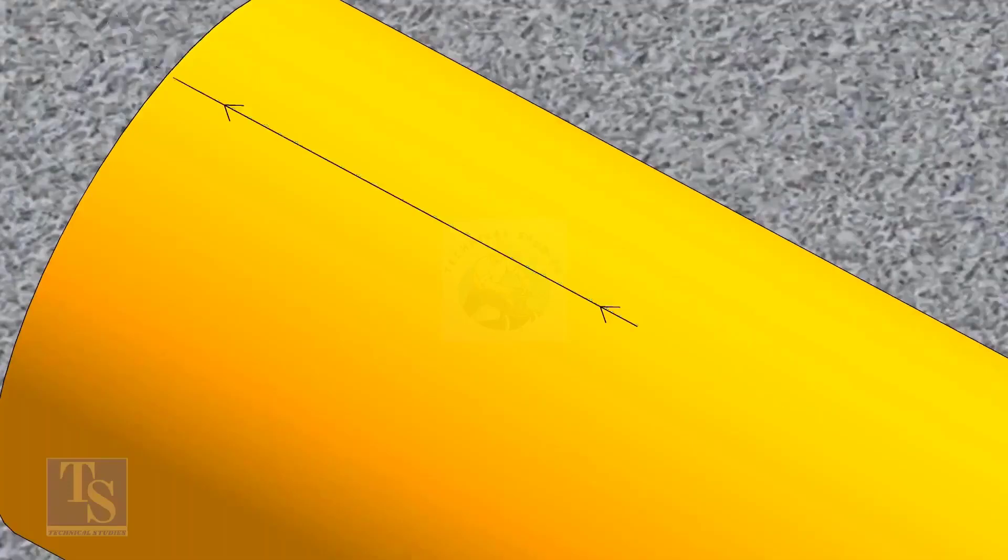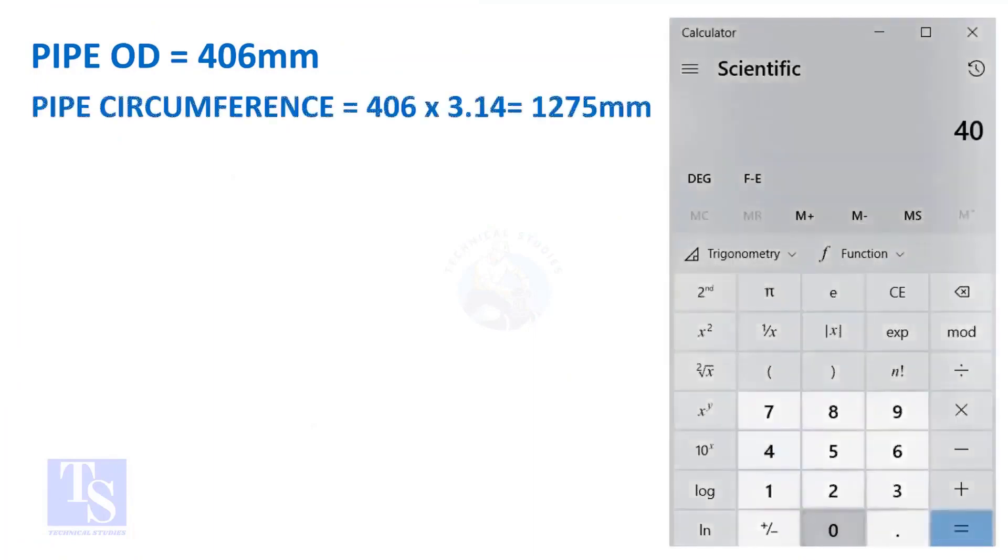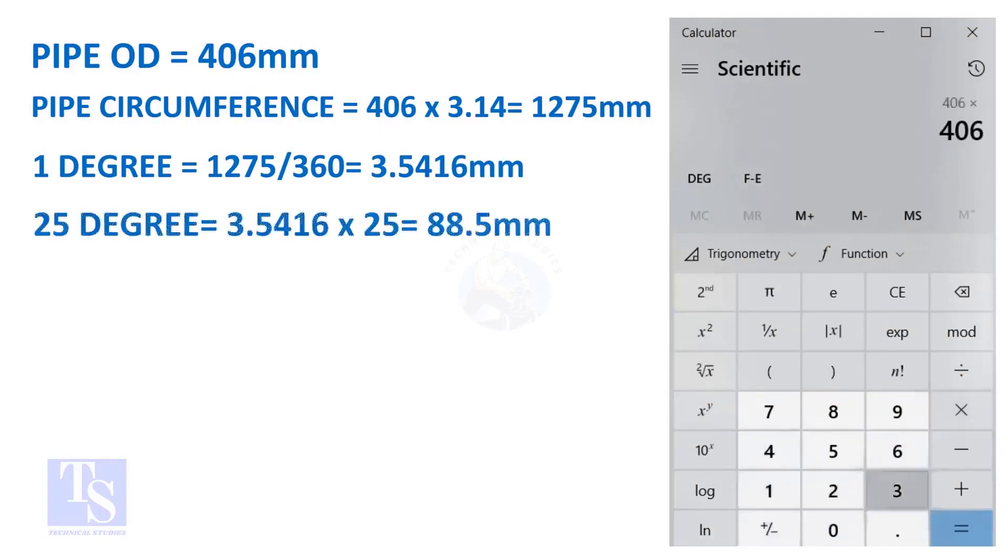Let us calculate the circumferential distance or arc length for 25 degrees. Multiply the OD by 3.14. You will get the circumference of the pipe. Divide the circumference by 360, you will get the arc length of 1 degree. And finally, multiply the 1 degree arc length by 25. Now you have the arc length of 25 degrees. You can apply this formula to get the arc length of any degree.